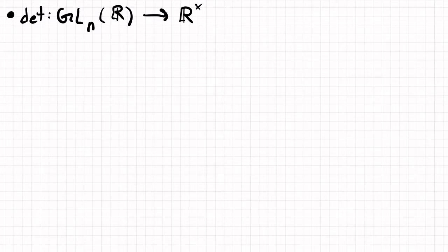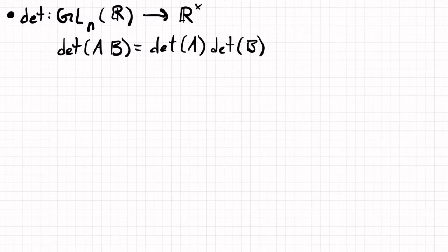And so the reason this is a function, it's a map, and to show that it's a homomorphism, we would have to say that the determinant of matrix A times the matrix B is equal to the determinant of the matrix A times the determinant of the matrix B. And this is a linear algebra fact, which I'll put a link in the description for, if you're interested.